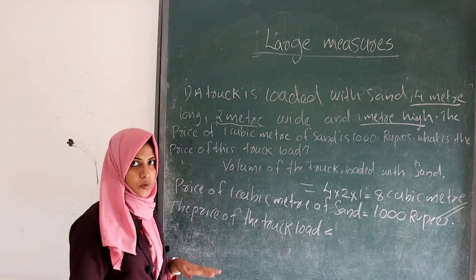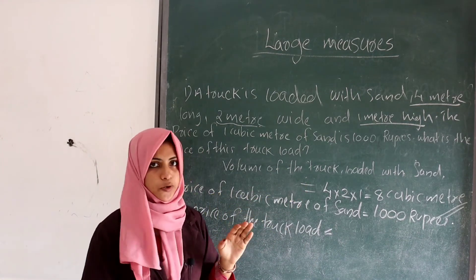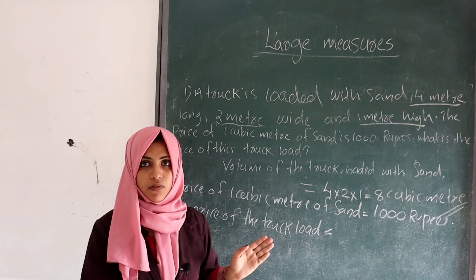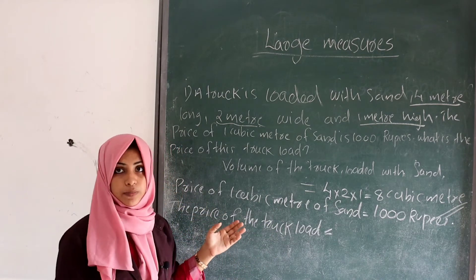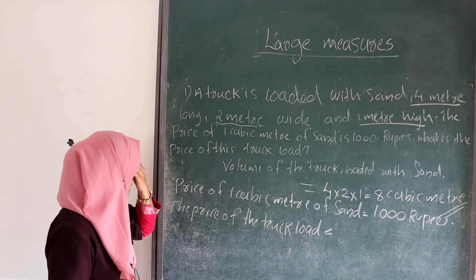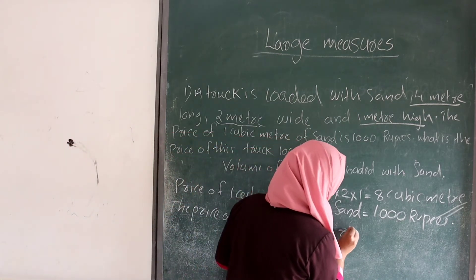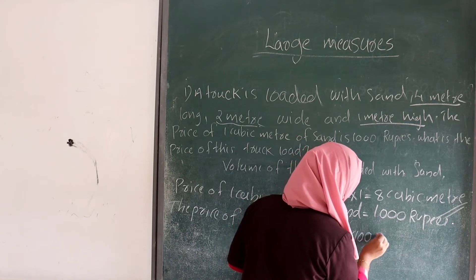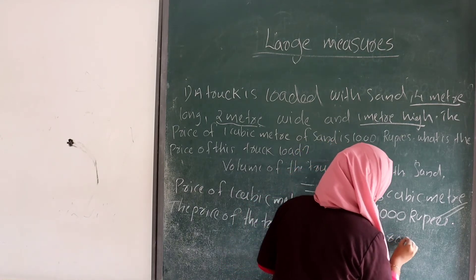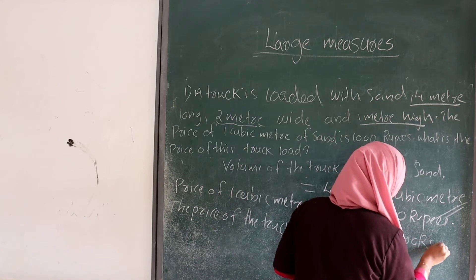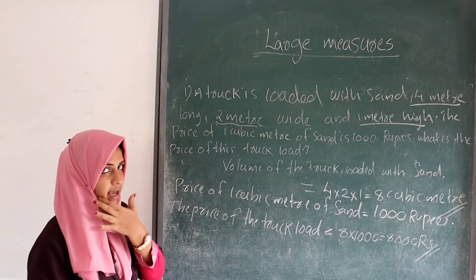The price of the truck load is found by multiplying the volume by the price of 1 cubic meter of sand. So, 8 × 1000 = 8000 rupees. So, 8000 rupees is the price of the truck load of sand.